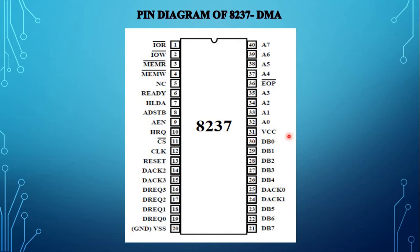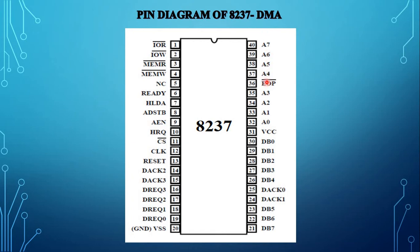Pin number 31 is VCC, where a plus 5 volt power supply is required for the 8237. Pin numbers 32, 33, 34, and 35 are A0 to A3, which are bidirectional address lines used to select internal registers during programming mode. Pin numbers 37, 38, 39, and 40 are A4 to A7, which act as unidirectional address lines activated only during DMA operation.